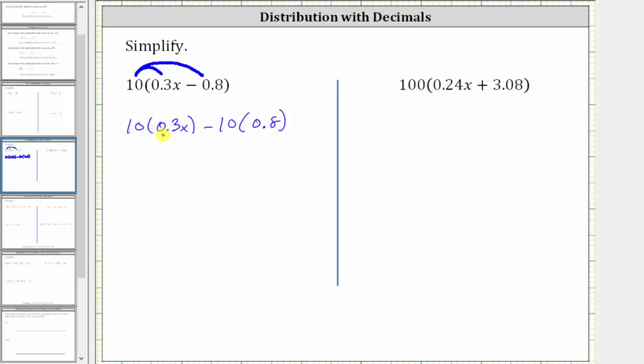and therefore 10 times 0.3x is 3x, and 10 times 0.8 is 8. The expression simplifies to 3x minus 8.